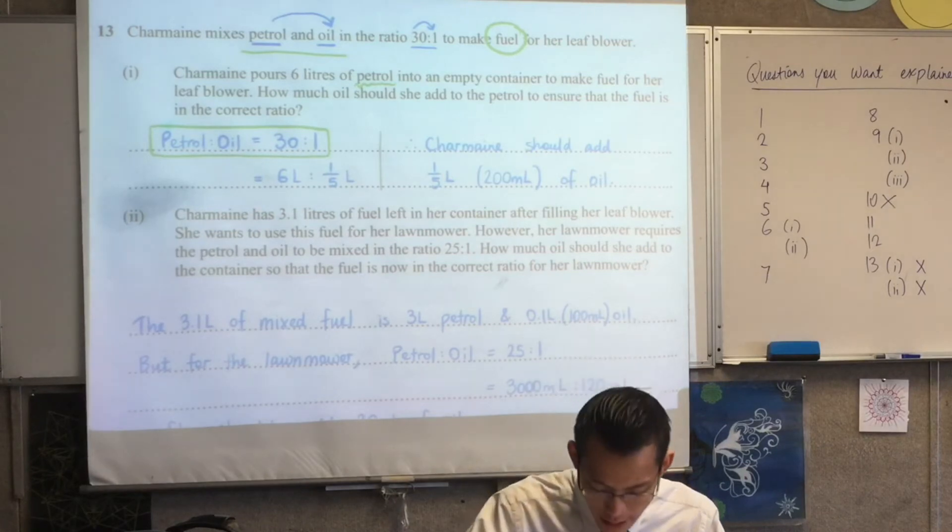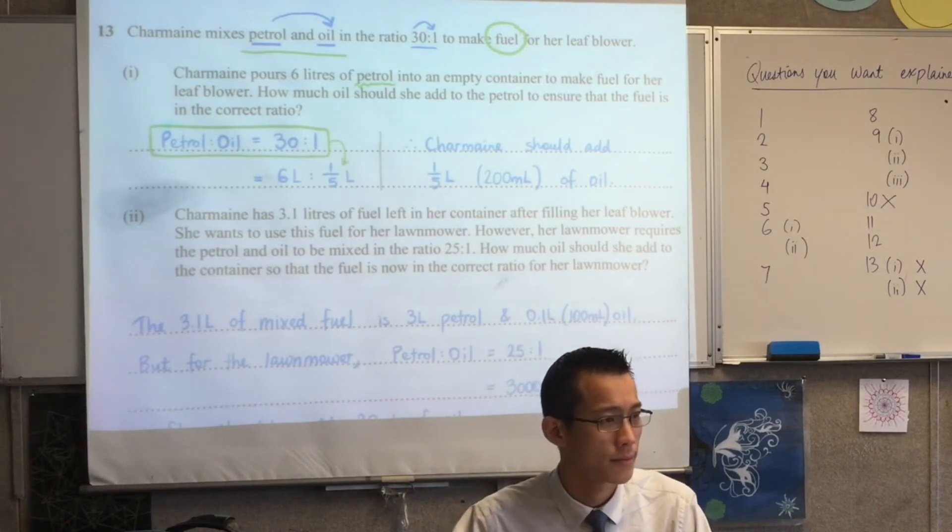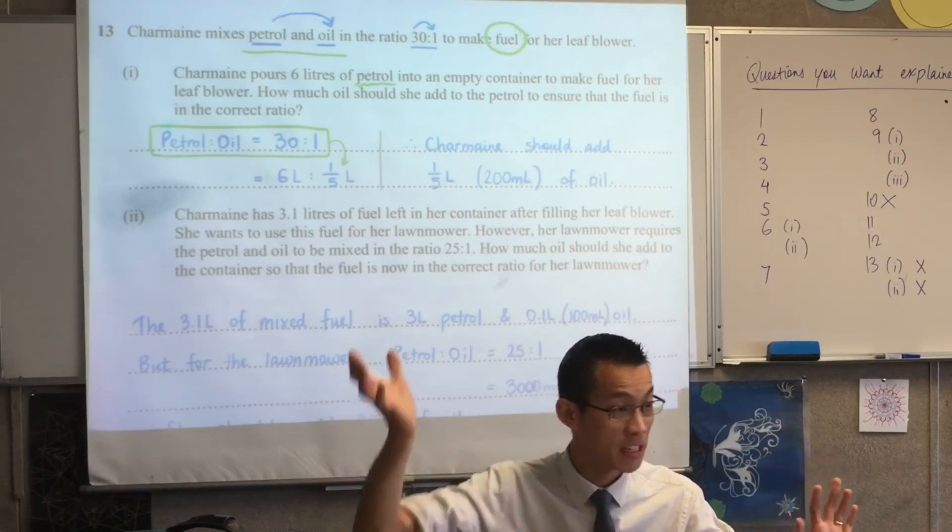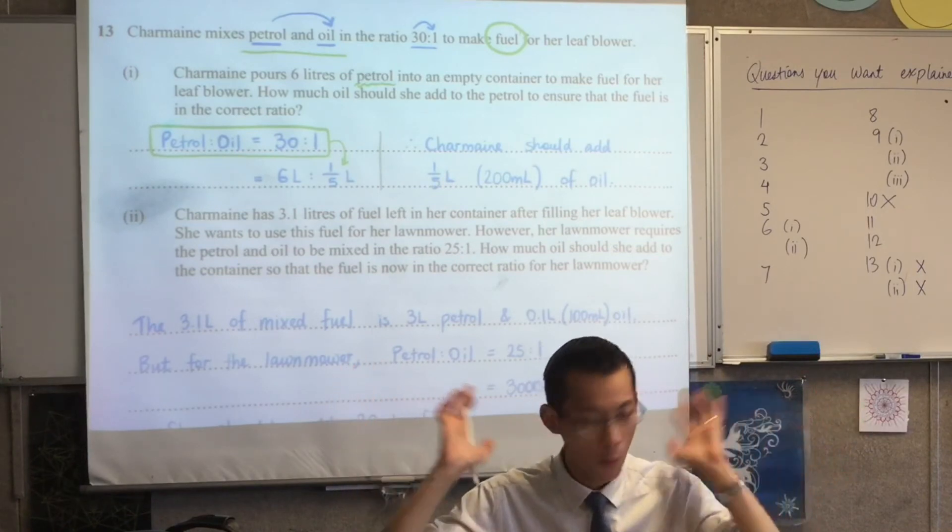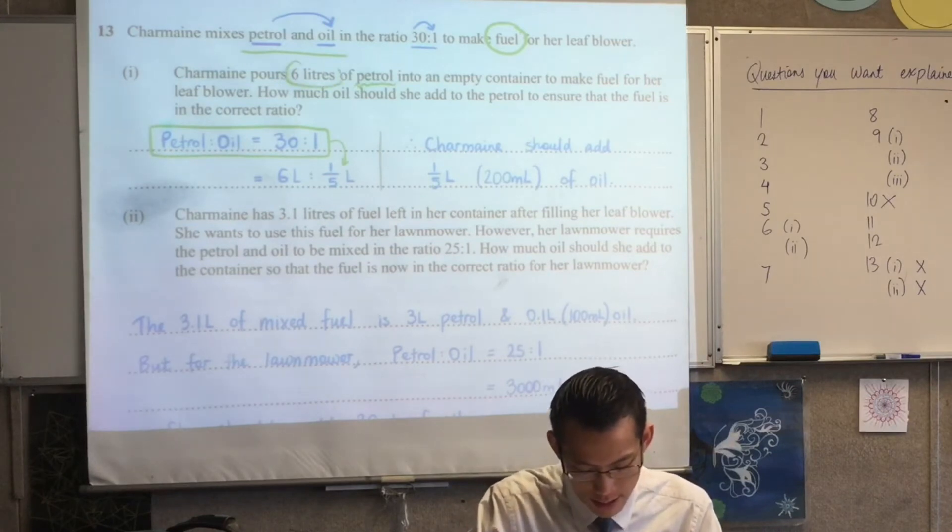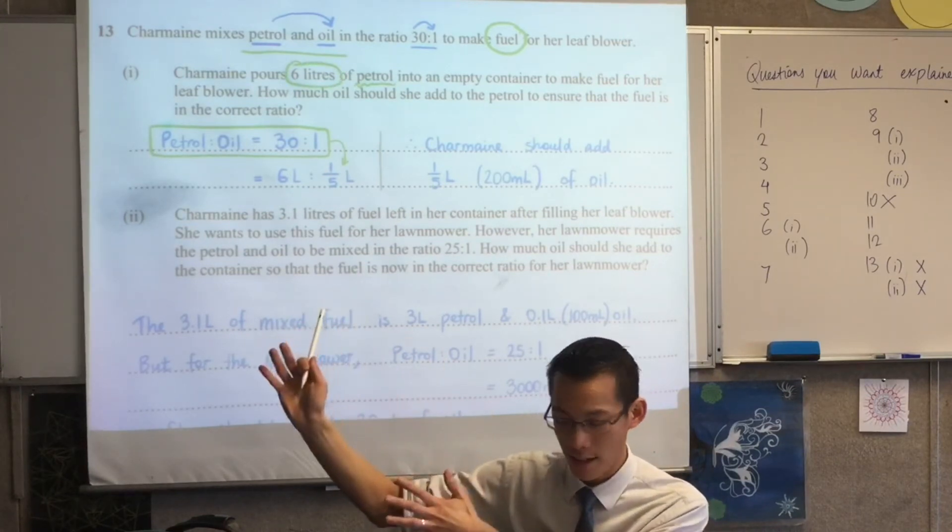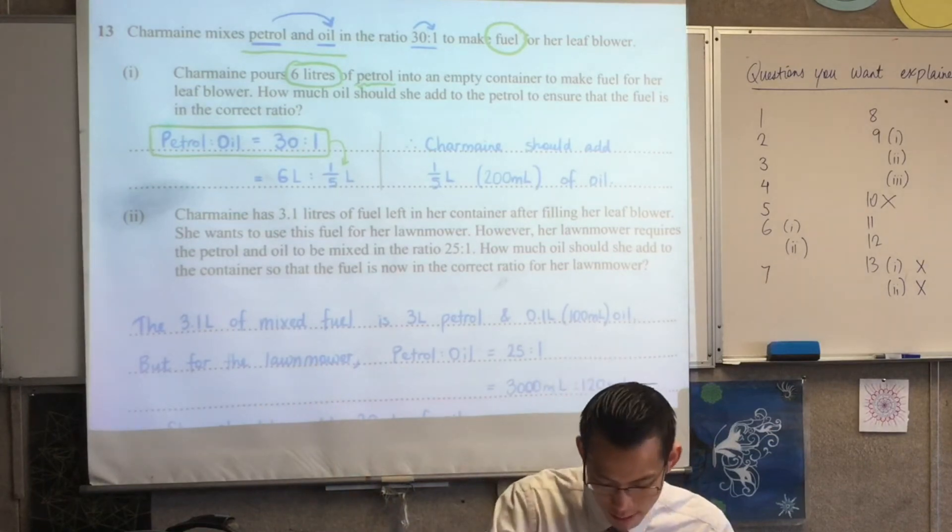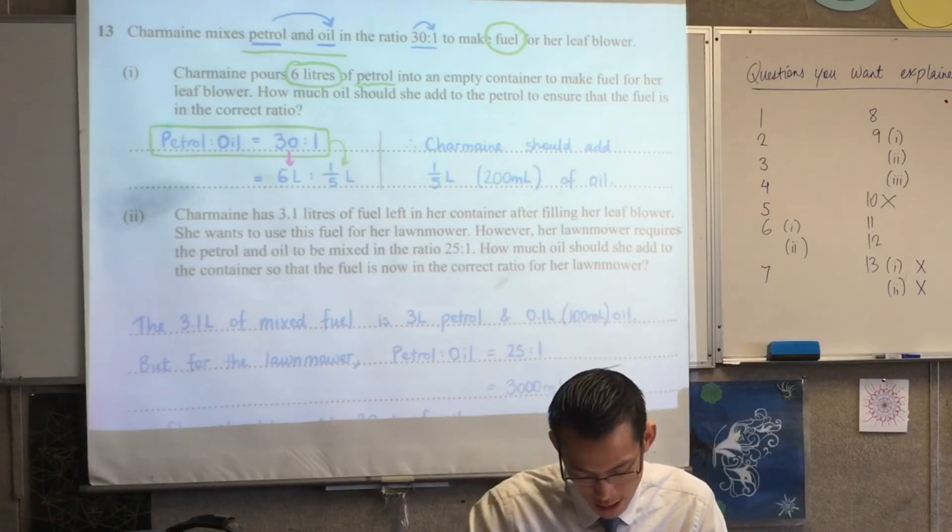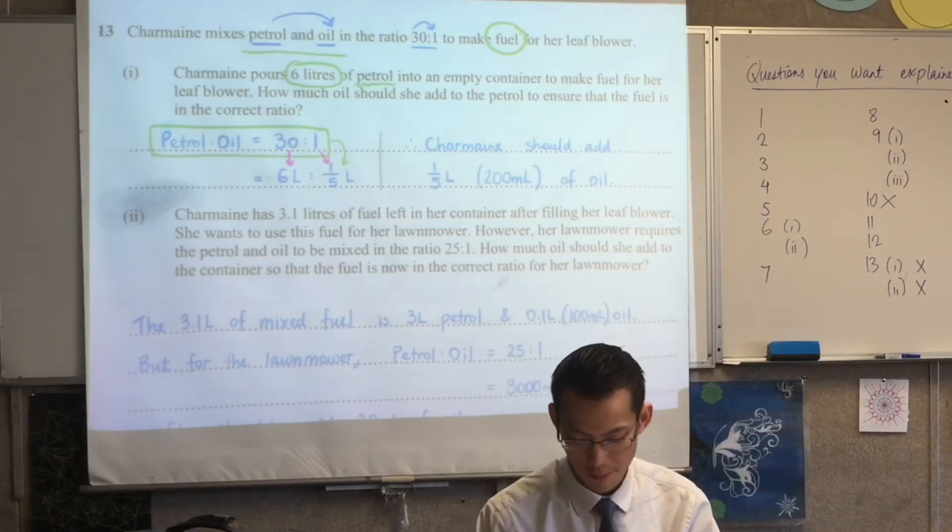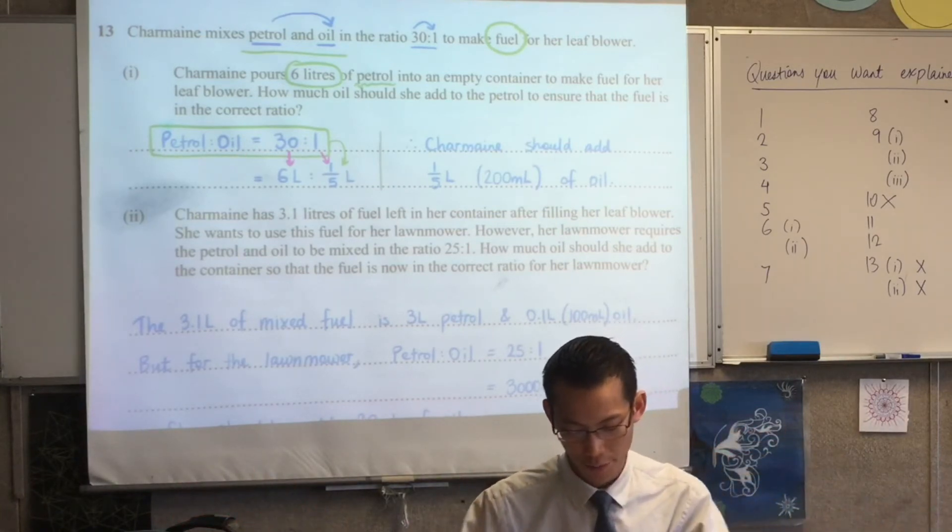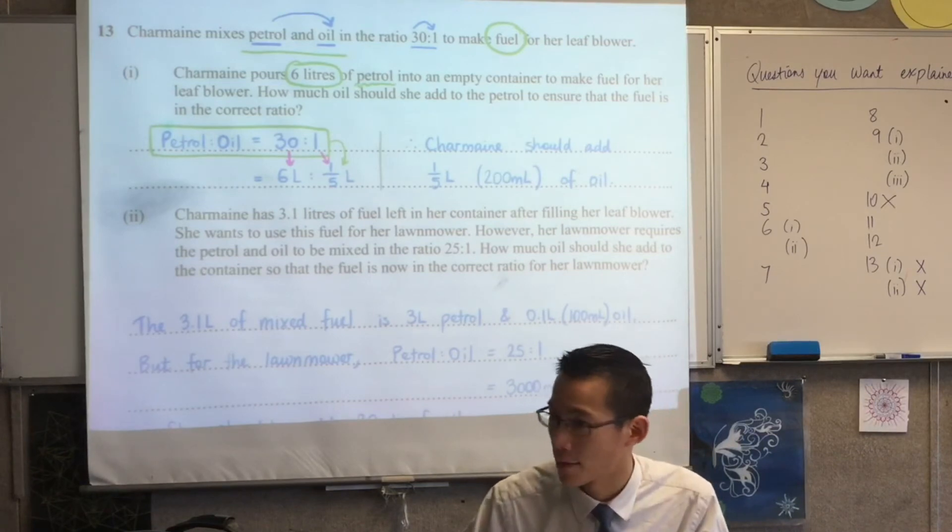That's literally just the ratio that's been given to me. So how do I turn that? What have I done to turn that into the next line? Yeah. I see. Okay. 30 to one. 30 liters to one liter. 30 mils to one mil. But what I actually have, or what Charmaine has rather, is six liters right there. Six liters. So that number there on the left-hand side, the 30, that represents petrol. So I want to turn that. Let's choose a new color. I want to turn that into six. So I divide it by five, which means I divide that by five. And that's where my numbers come from. Six liters petrol. One fifth of a liter of oil, which you could have converted to mils if you liked, but you didn't have to.